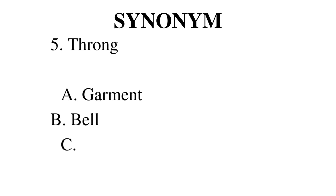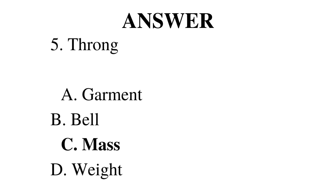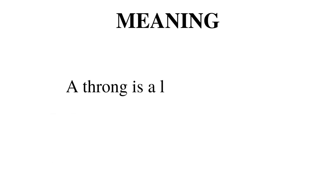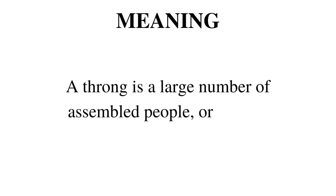Number 5. What do you mean by throng? Is it A garment, B bell, C mass or D weight? The correct answer is C mass. A throng is a large number of assembled people or a mass.